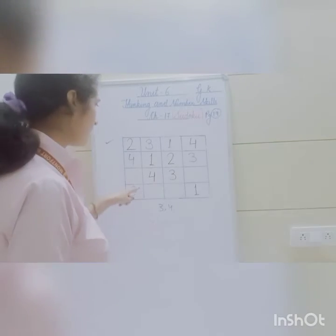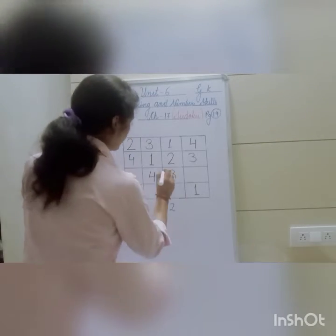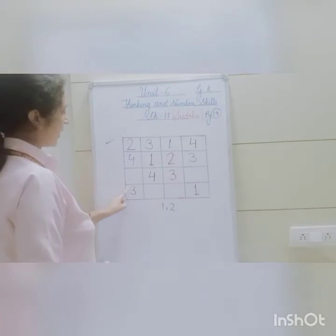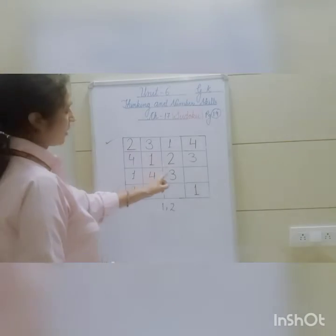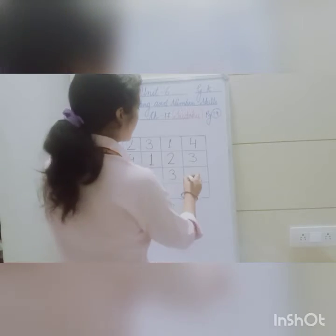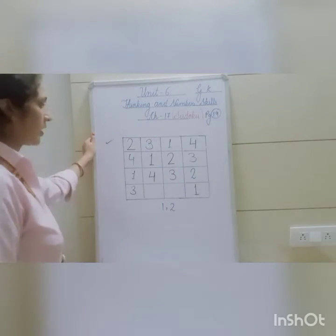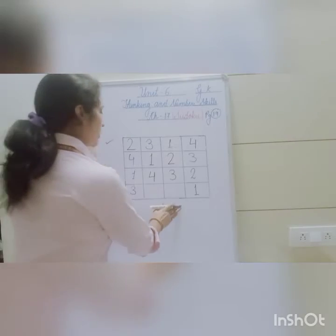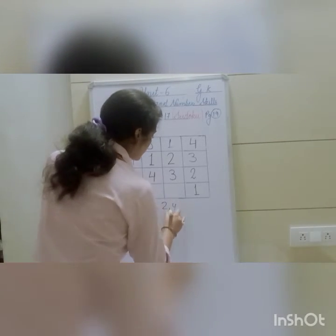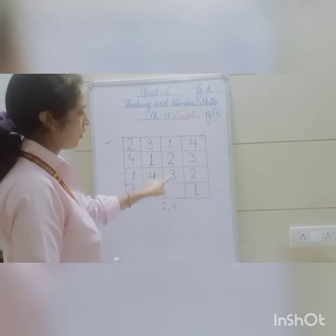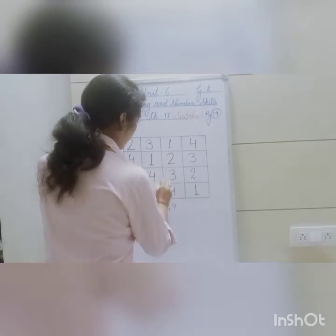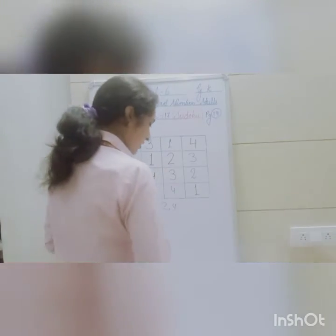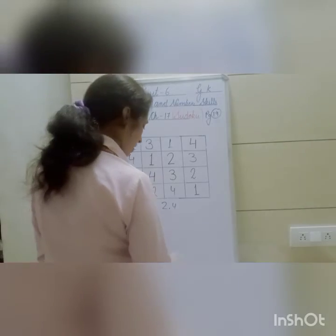Come to the third row. 3 and 4 are given, so we have to fill 1 and 2. Filling 1 here — 1 is not in this column, so yes, 1 goes here. And 2 we can fill on the other side. For the last row, 1 and 3 are there, so we fill 2 and 4. 2 cannot go here because 2 is already in that column, so 4 goes here and 2 goes in the last blank. The first Sudoku box is complete.